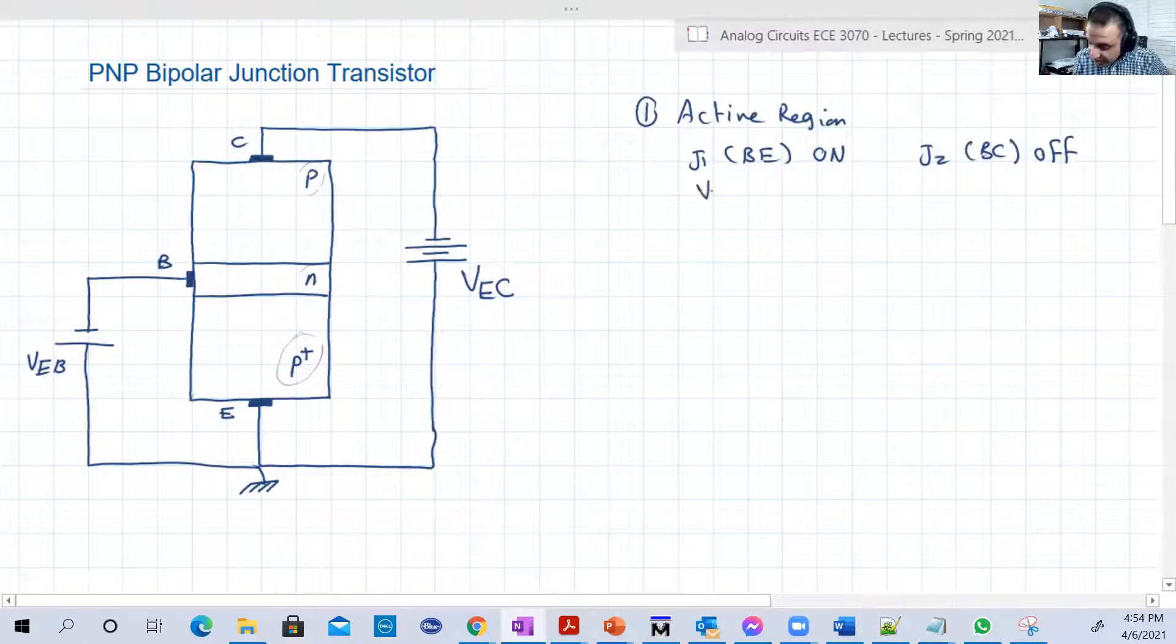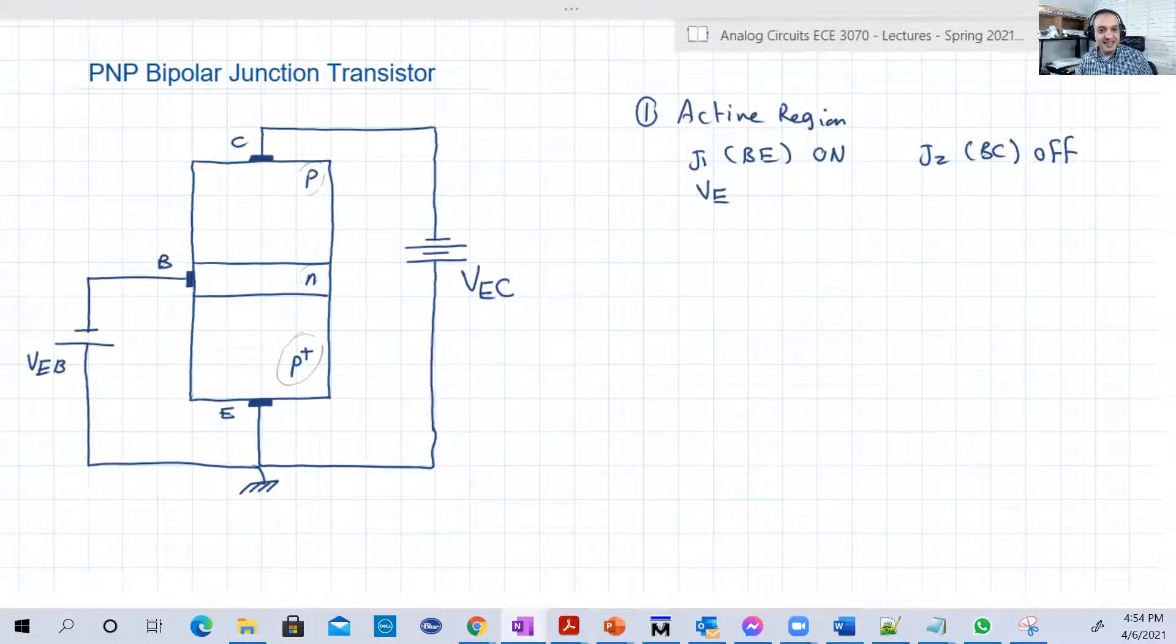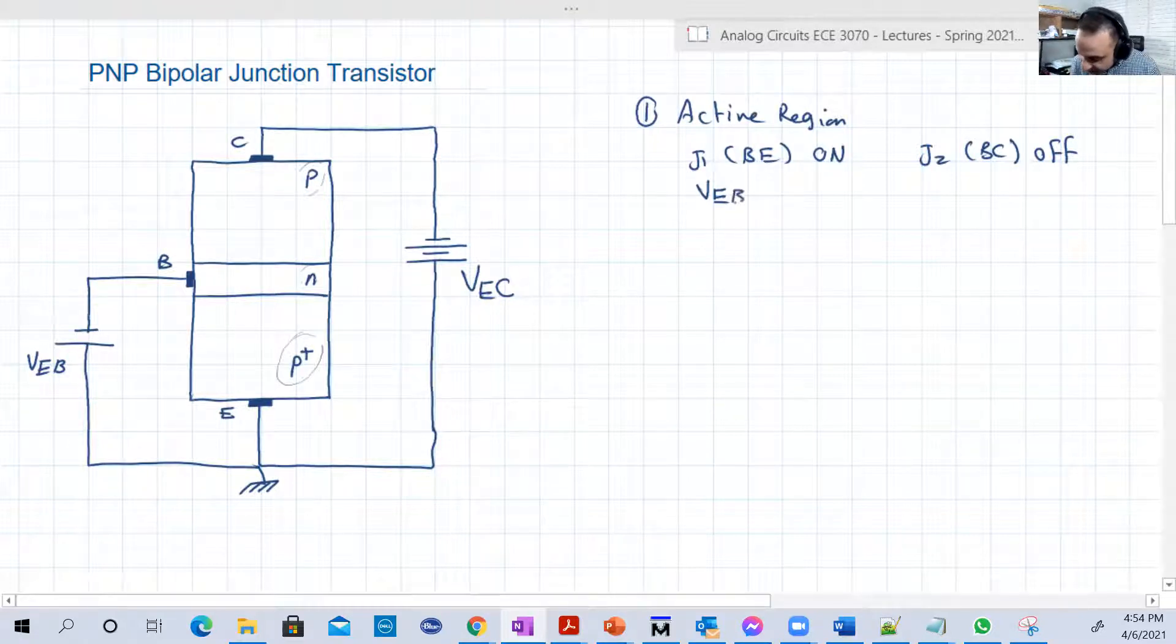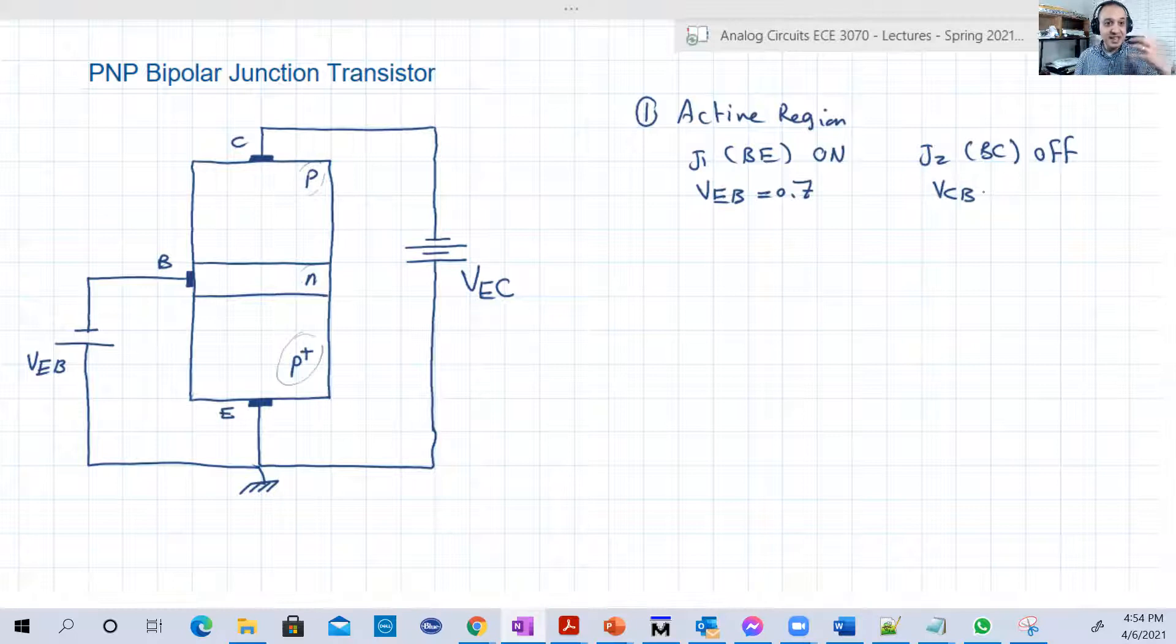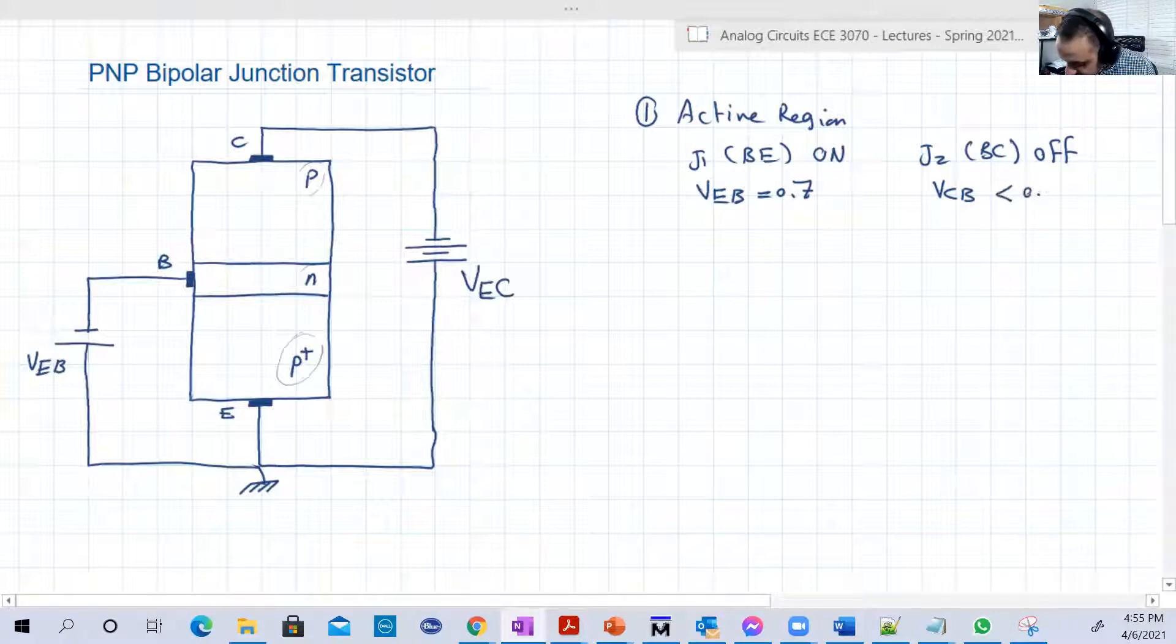For this reason, VEB, not VBE, because E now is the P type and the base is the N type, VEB should be 0.7. And VCB, the voltage of the second junction J2 between the base which is N type and the collector which is P type, VCB should be less than 0.4.